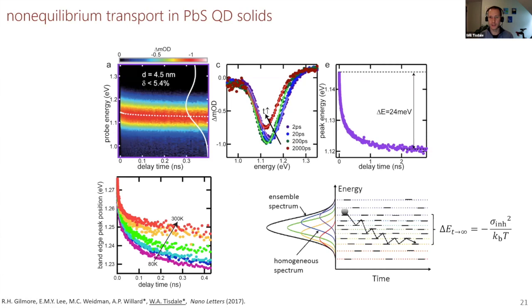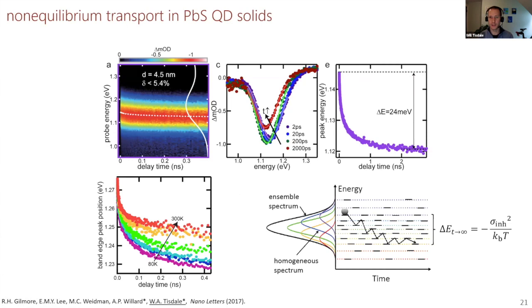This behavior is completely consistent with incoherent hopping dynamics within a disordered energy landscape. Importantly, when we look at the temperature dependence of this behavior, at room temperature we have some transient relaxation, and then as we decrease the temperature, the equilibrium relaxation of the carriers in the system goes deeper and deeper. This is exactly what you expect for a Boltzmann distribution over a Gaussian density of states, where the expectation value of energy as time goes to infinity is the center of the distribution minus an amount of energy sigma squared over kT. So as you decrease temperature, there's less thermal energy to kick you out of those lowest energy sites.